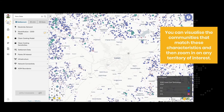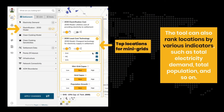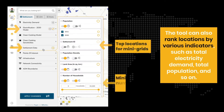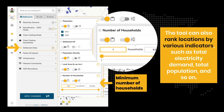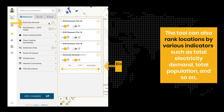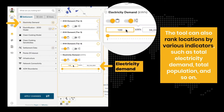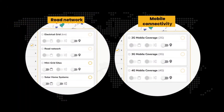The tool can also rank locations by various indicators such as total electricity demand, total population, and so on. You can even overlay the road network and mobile coverage data to see how well that community is connected.